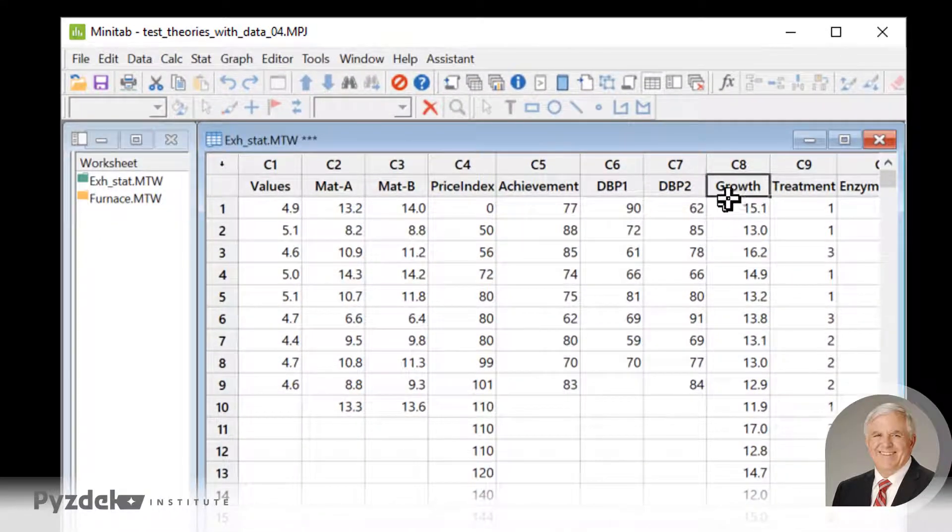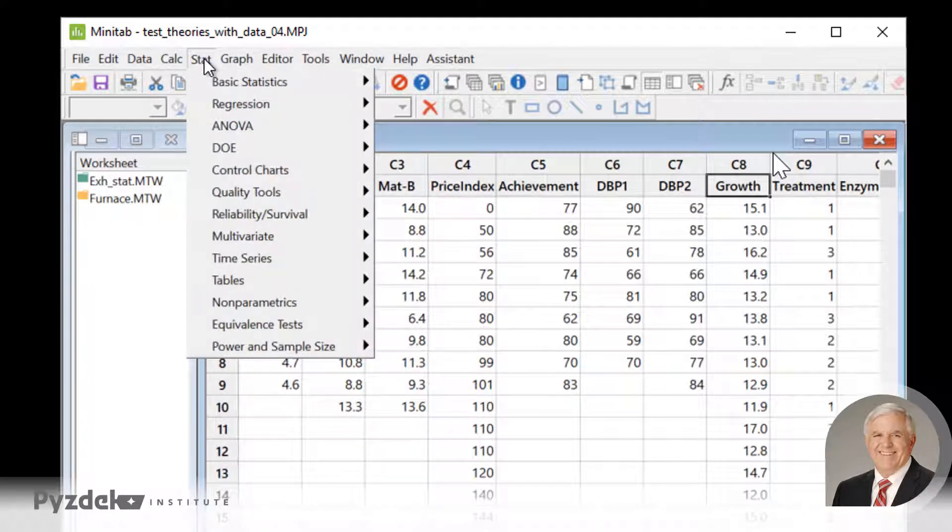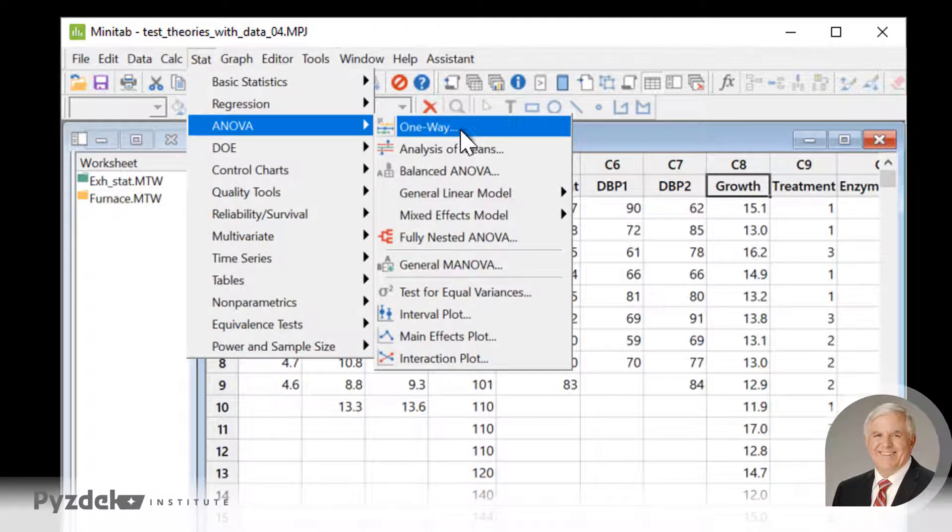We'll use the same data, which is our growth data based on treatments, and this time we're going to do a one-way analysis of variance. We'll go to the STAT menu, then down to the ANOVA menu, and we want to do one-way analysis of variance.